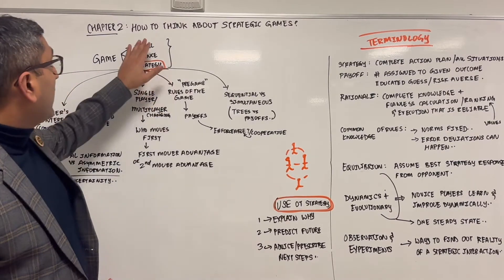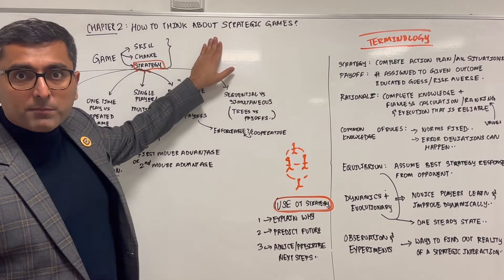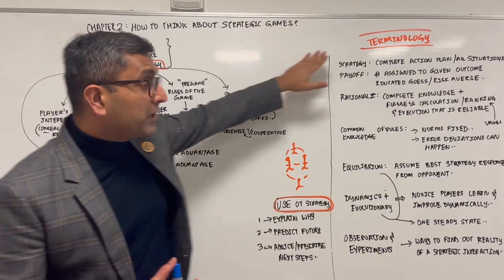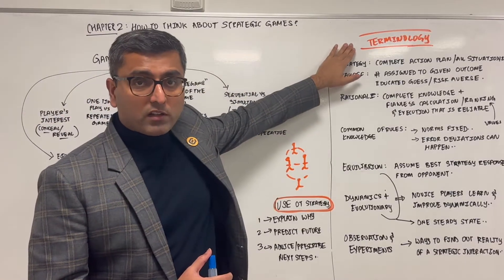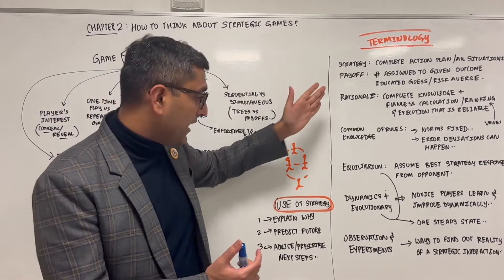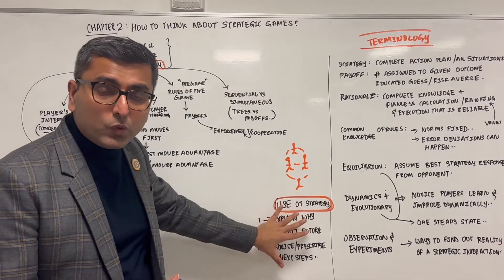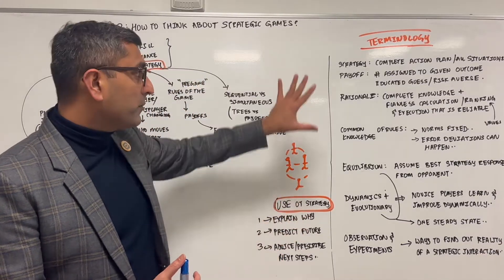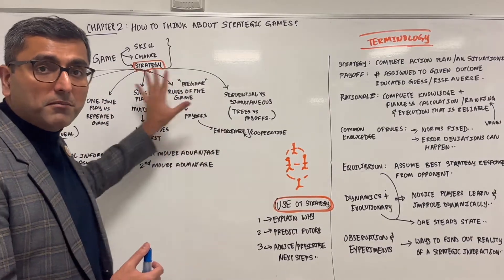Chapter 2: how to think about strategic games. What are the terminologies that are commonly used for describing a specific game, and what is the use of knowing all of these terminologies and different aspects of the game?